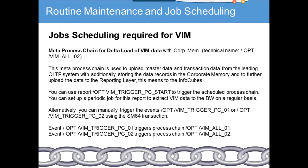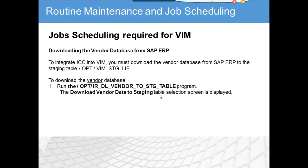The meta process chain is used for delta load of VIM data with BW/BW-IP. This meta process chain uploads master data and transactional data from the system. You can use a report to trigger the scheduled process chain for the delta load of VIM data.